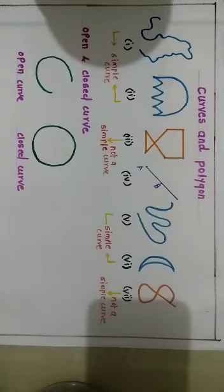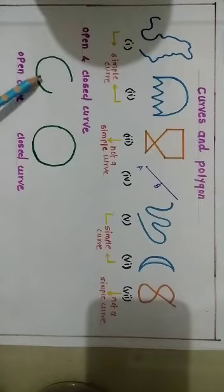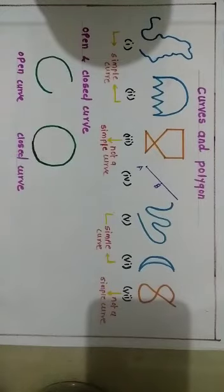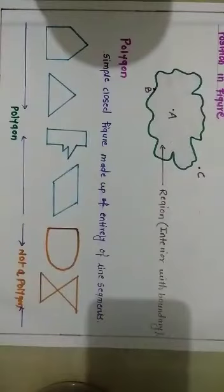In our daily language, curve means not straight, but in mathematics a straight line can also be considered as a curve, so figure number 4 is also considered as a curve. Now there are two types of curves: open curve and closed curve. Open curve means where the starting and ending points are different, and closed curve means the starting and ending points are the same.